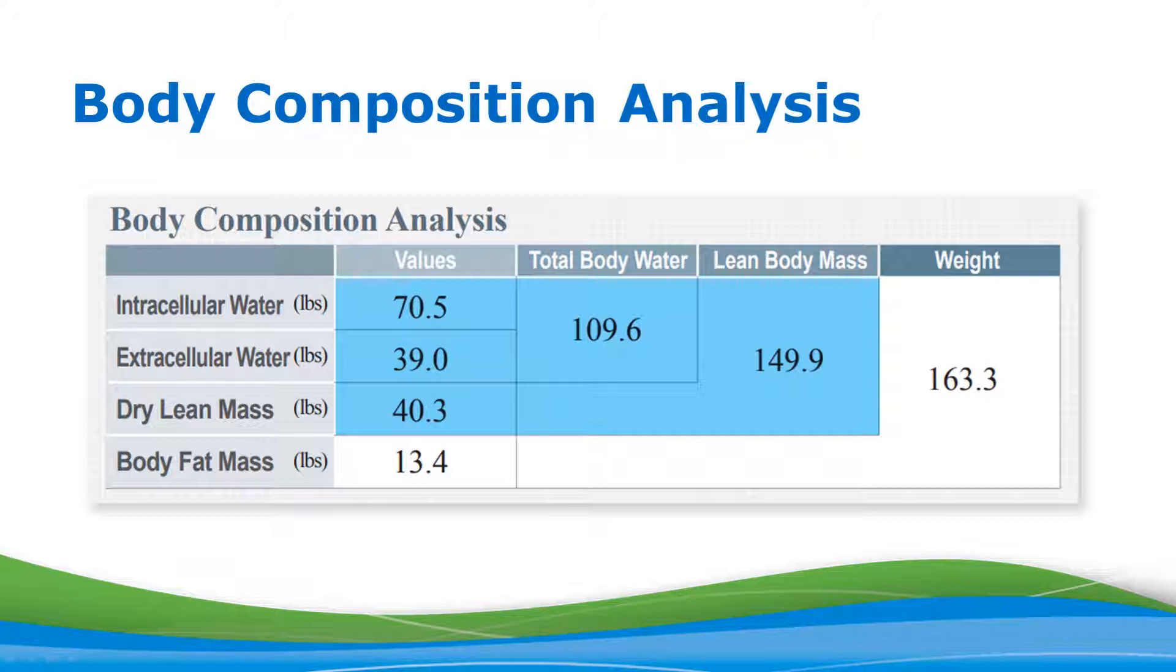Lean body mass is the weight of everything in the body that is not body fat, including muscle, water, bones, organs—everything that is not body fat. Body fat mass is below dry lean mass, and the body fat mass value reports all the body fat of the person being tested. This includes both the surface level or subcutaneous fat values as well as the visceral fat levels, which we'll talk about more in a little bit.